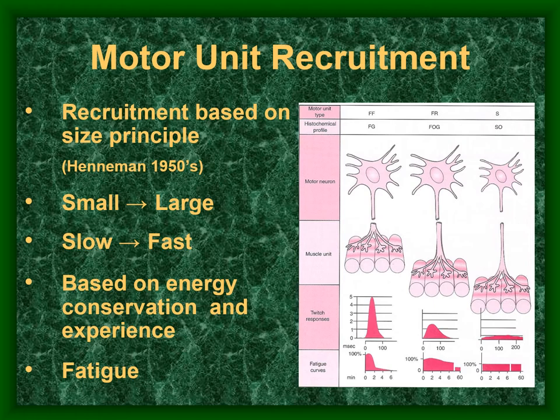In the diagram, the large motor units with fast-twitch fibers on the left can generate the most tension but sustain it for the least time. Progressing to small motor units with Type 1a fibers, these cannot generate much tension but can sustain it for a long time — and this is actually a continuous variable, not categorical.